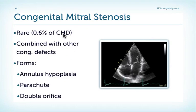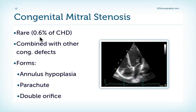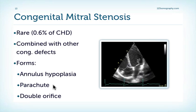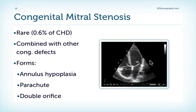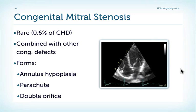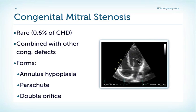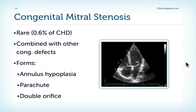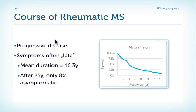The third cause of mitral stenosis is congenital malformations of the mitral valve — basically very rare and usually combined with other defects. Three typical forms are annulus hypoplasia, the parachute mitral valve, and the double orifice mitral valve. The parachute mitral valve is characterized by a unifocal insertion of the mitral valve leaflets. There is a funnel-like stenosis, which is only mild in this case — patients do not necessarily have mitral stenosis in parachute mitral valve. We also see a strange motion of the valve that resembles a parachute.